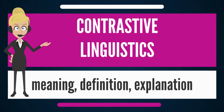Contrastive linguistics is a practice-oriented linguistic approach that seeks to describe the differences and similarities between a pair of languages, hence it is occasionally called differential linguistics. While traditional linguistic studies have developed comparative methods — comparative linguistics — chiefly to demonstrate family relations between cognate languages or to illustrate historical developments of one or more languages, modern contrastive linguistics intends to show in what ways two respective languages differ in order to help in the solution of practical problems. Sometimes the terms diachronic linguistics and synchronic linguistics are used to refer to these two perspectives.